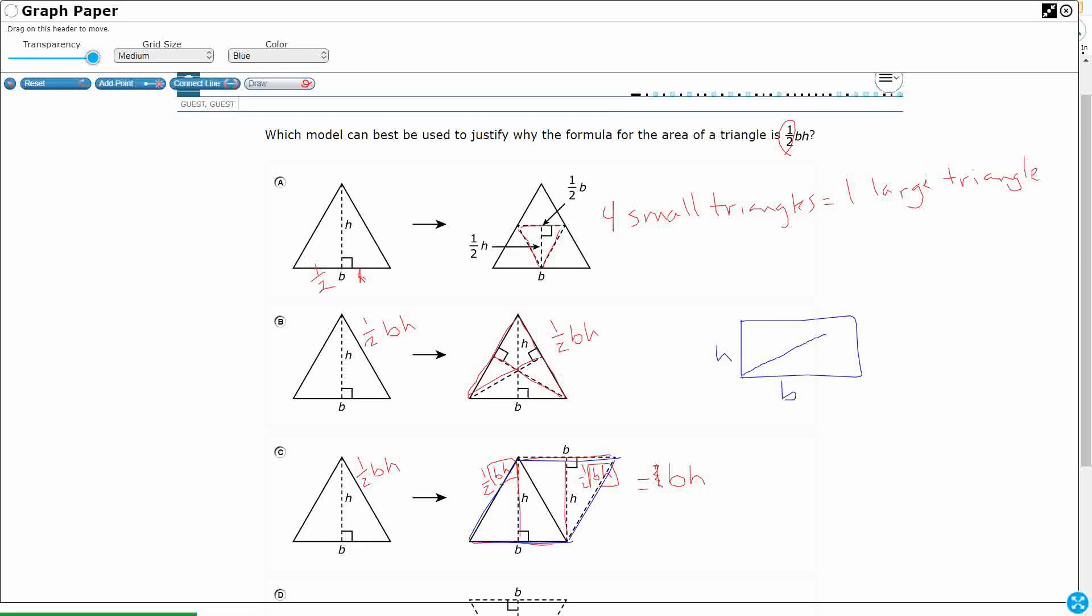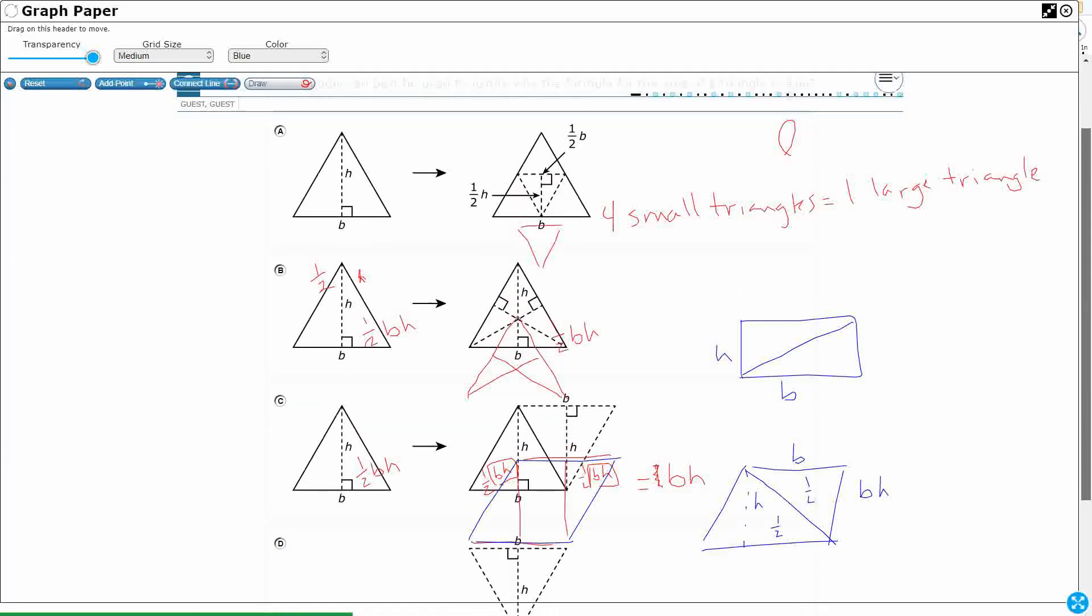You could take any rectangle, you can cut it into two triangles. That's why it's one-half base times height. Or in this case, we made a parallelogram, it's the same thing. Take this base, take the height, and you get base times height, even if it's a parallelogram. So if you cut that in half, you're going to get one-half base times height for the two triangles you make. So C makes a lot of sense.